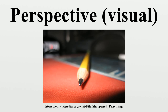Linear perspective. As objects become more distant, they appear smaller because their visual angle decreases. The visual angle of an object is the angle subtended at the eye by a triangle with the object at its base. The greater the distance of the object from the eye, the greater is the height of this triangle, and the less the visual angle. This follows simply from Euclidean geometry.